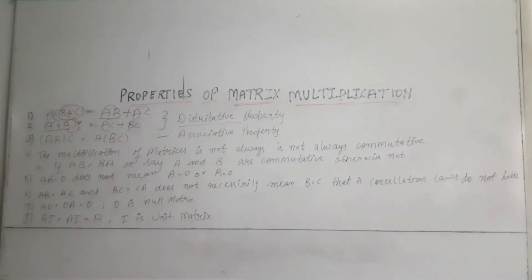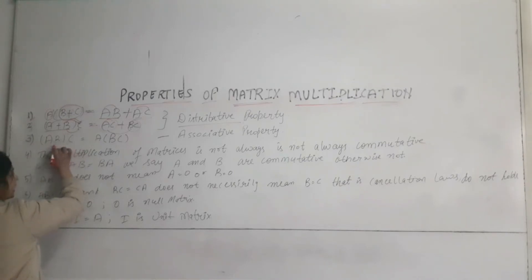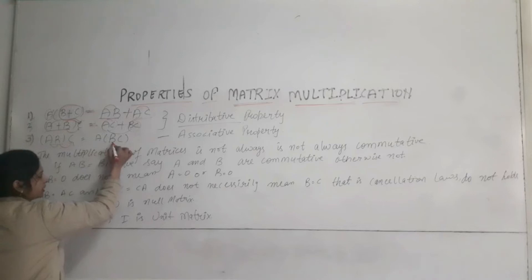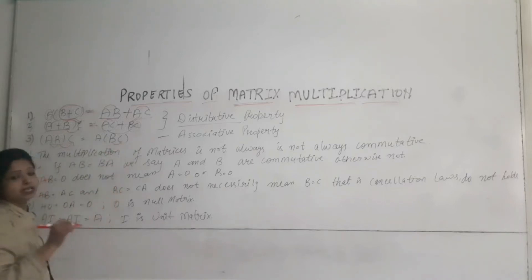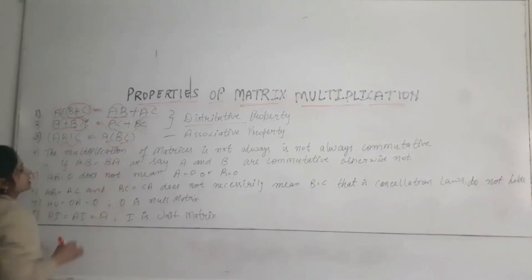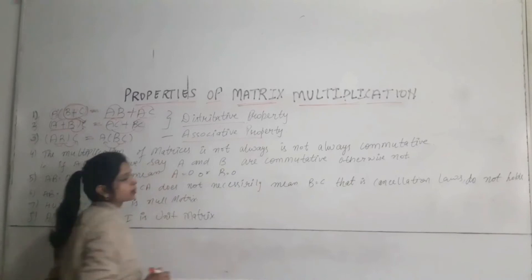These first and second cases are the distributive property. Next is AB into C. That means, when we multiply A and B matrix and then multiply the resulting matrix by C matrix, this is equal to first multiplying B and C matrix and then multiplying the resulting matrix by A matrix. Both matrices will be the same. This is called the associative property.